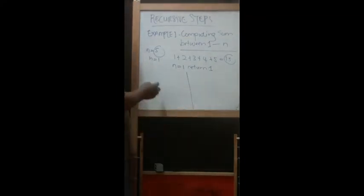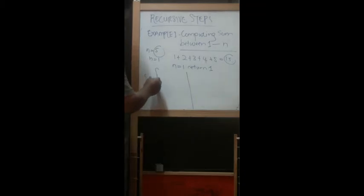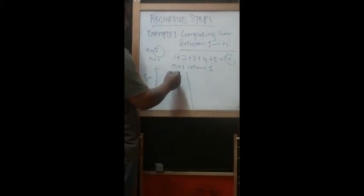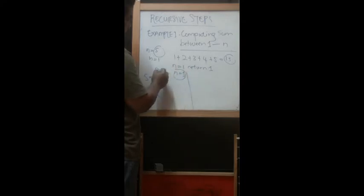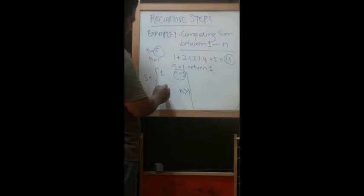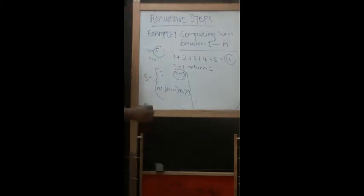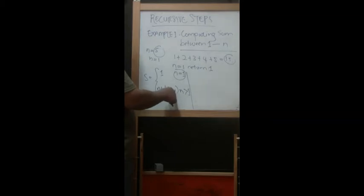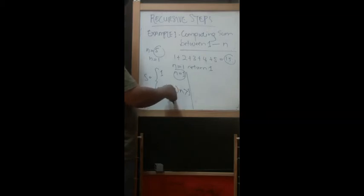From this equation we can write the recursive function. If n equals one, we return one. But if n is greater than one, we return n plus the result of calling the function with n minus one, which reduces n by one each time — n minus one, n minus two, n minus three — until it reaches the base case and returns one.